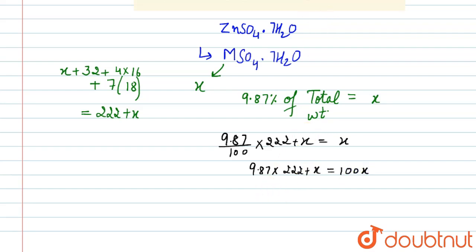After solving this, we get the value of X as 24.3. So this is our answer - the atomic weight of metal M is 24.3.